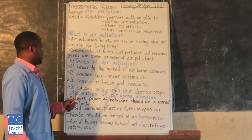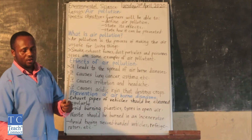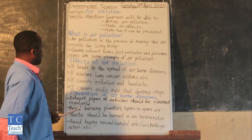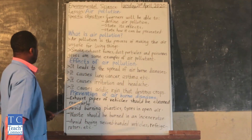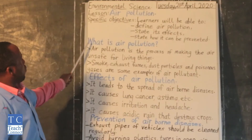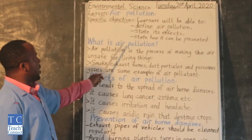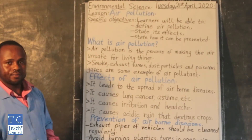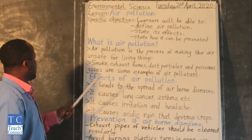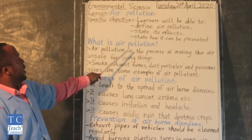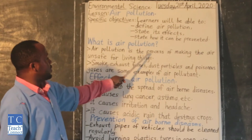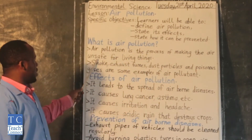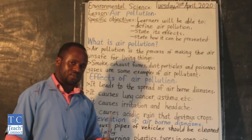We go straight to our summary notes. And this is our summary notes on the board. We have here: what is air pollution? Air pollution is the process of making the air unsafe for living things.